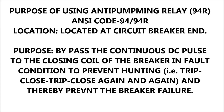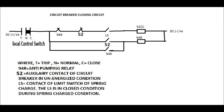The anti-pumping relay, normally represented in ANSI code as 94 or 94R, is located at the breaker end. Its main purpose is to bypass the continuous DC pulse to the closing coil of the breaker in fault conditions, to prevent hunting — that is, trip-close-trip-close again and again — and thereby prevent failure of the breaker.